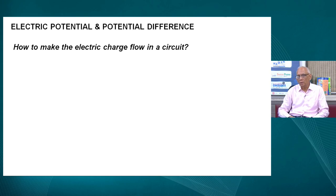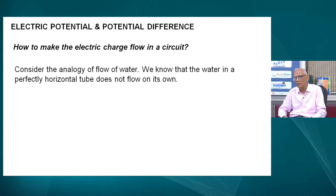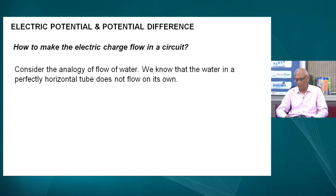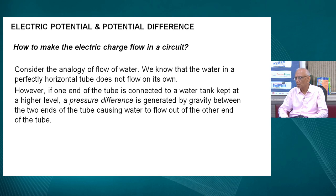Now we come to the next important point: how to make electric charge flow in a circuit? Because current electricity means charges need to flow. For this purpose, let us consider an analogy of flow of water. If we have a horizontal pipe, water cannot flow on its own. However, if one end of the tube is connected to a water tank kept at a higher level, a pressure difference is generated by gravity from higher level to lower level — and that is what makes water flow. So for flow of water through a pipe, you need pressure difference or level difference.